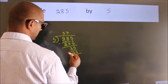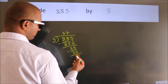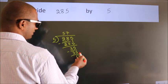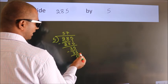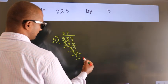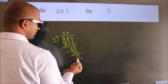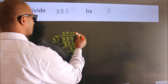Now we subtract and get 0. After this, there are no more numbers to bring down, and we got remainder 0. So this is our quotient.